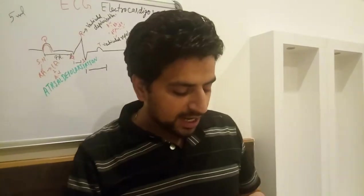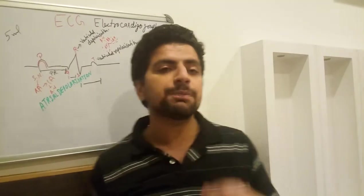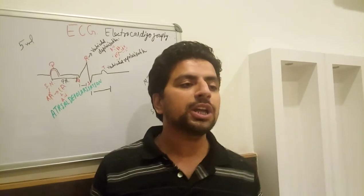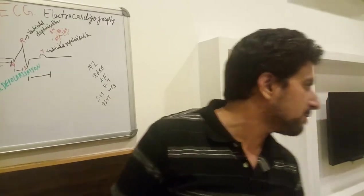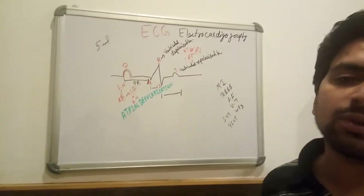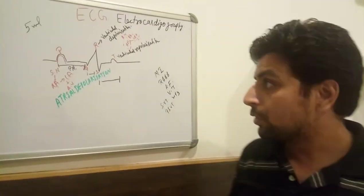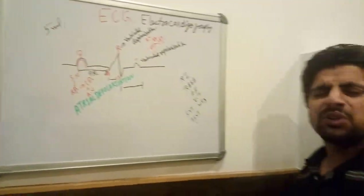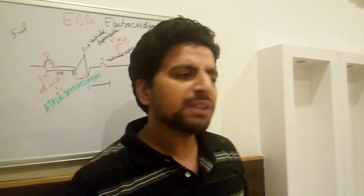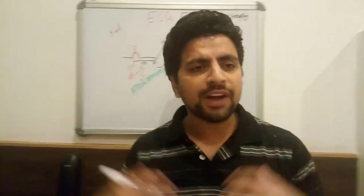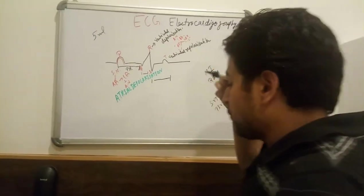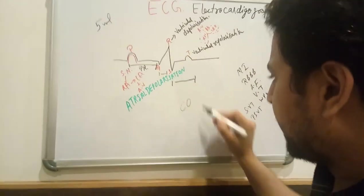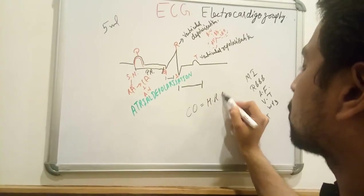My next question: what percent of total blood does the kidney filter? The answer is 20-25% of our total blood volume. And how much blood can the heart pump in one minute? That is cardiac output. Cardiac output equals heart rate multiplied by stroke volume.